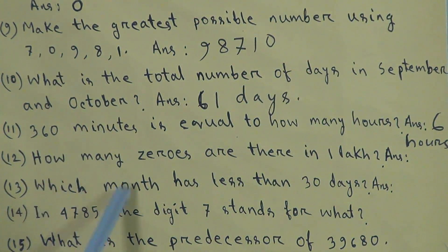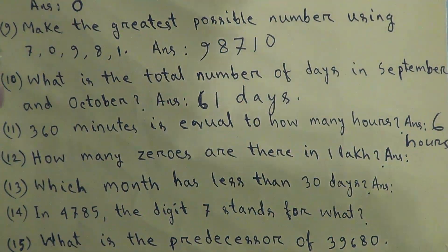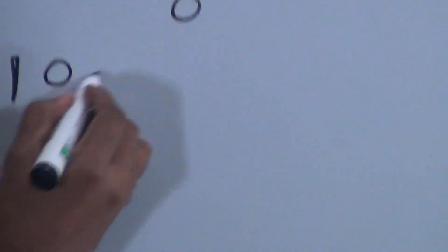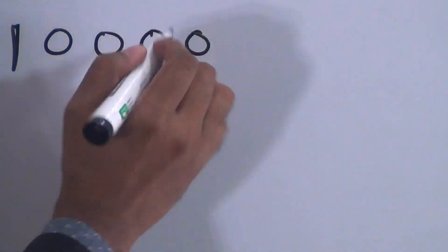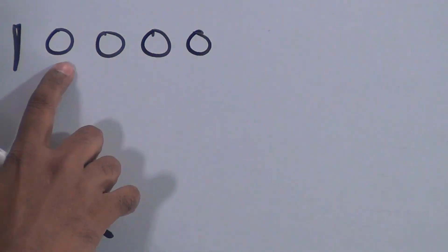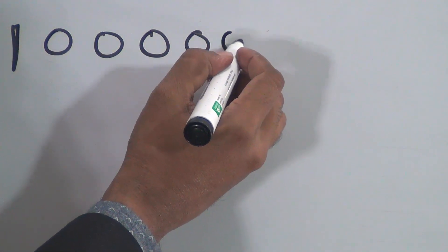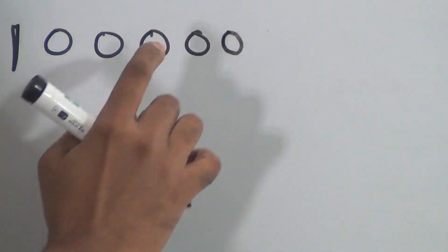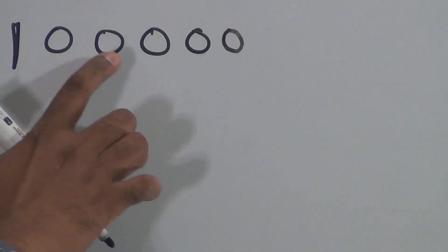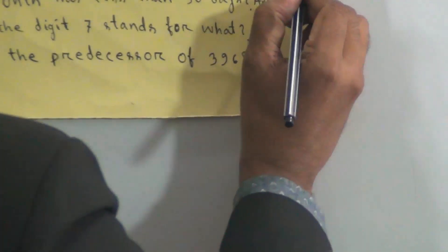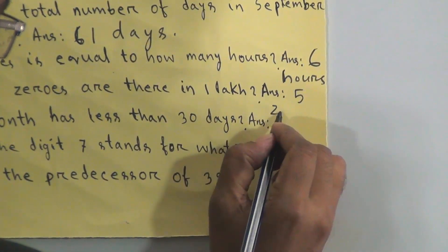Question 12: how many zeros are there in one lakh? One lakh is written as 1,00,000. If we count the zeros: one, two, three, four, five — there are 5 zeros. The answer is 5 zeros.